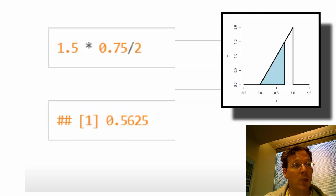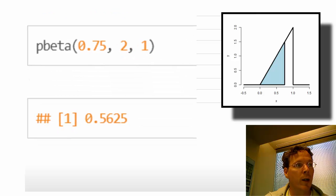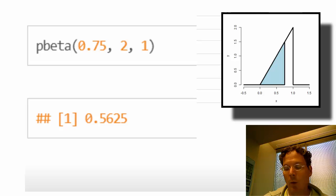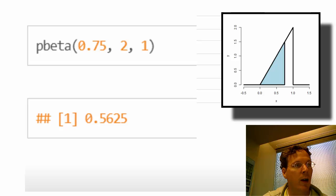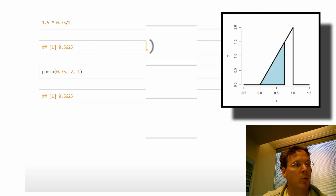This density is actually a special case of a known density called the beta distribution. I give the R code here for directly getting this probability from the beta distribution using p-beta — though we don't need it here since it's just working with triangles. In more complicated settings, we will need these functions. The letter P in front of a function name asks for probabilities, so p-beta gives the probability of being less than 0.75. The parameters 2 and 1 yield the exact triangle we're using, and you get the same answer: 56%.